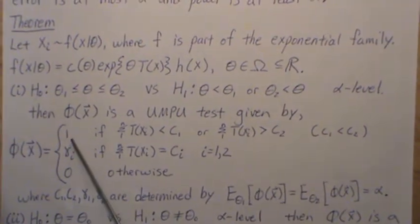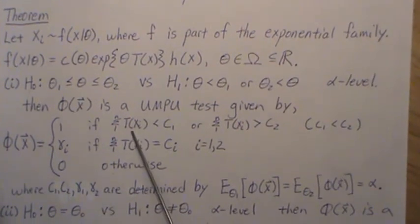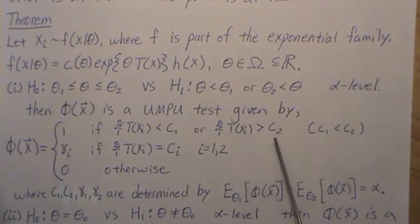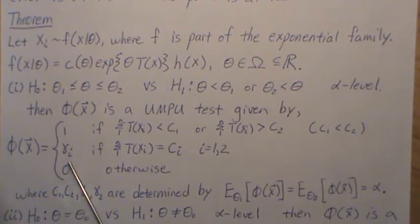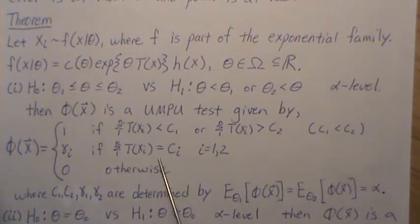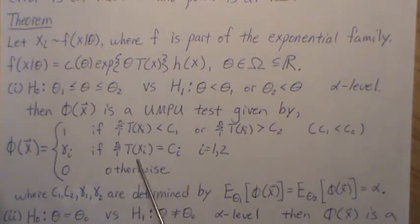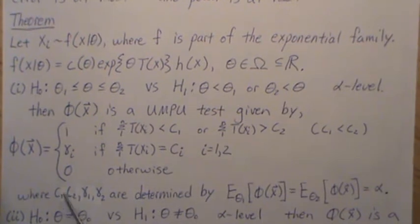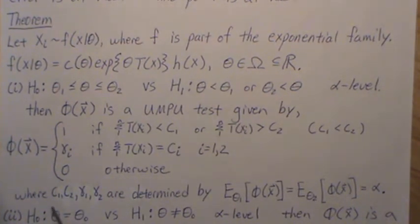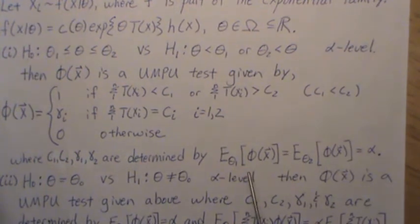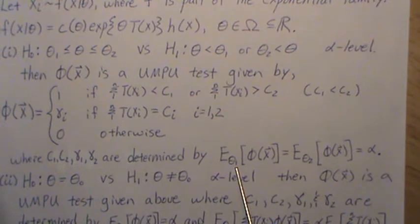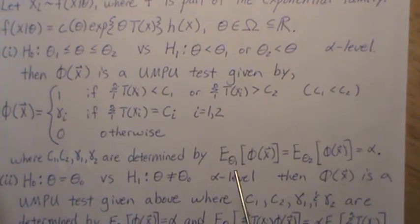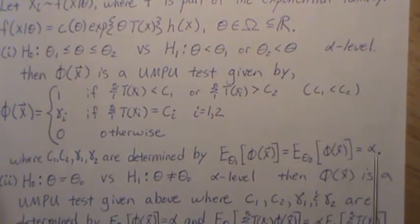The test rejects the null hypothesis if our test statistic is less than some c₁ or greater than some c₂. We randomize with γ₁ if the test statistic equals c₁, and with γ₂ if it equals c₂. The test statistic is the sum of the T(Xᵢ)'s, derived from the exponential form, and zero otherwise meaning we do not reject. The constants c₁, c₂, γ₁, γ₂ are determined by two equalities: the expected value of φ when θ equals θ₁ equals α, and when θ equals θ₂ equals α.